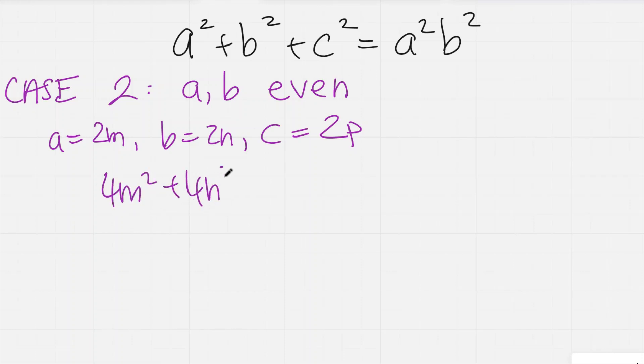And now just plugging all of this in, I'm going to get 4m² + 4n² + 4p² is equal to 16m²n². And so now what I can do is just divide everything by 4. So I get m² + n² + p² equals 4m²n².